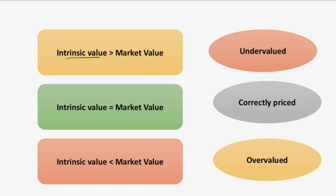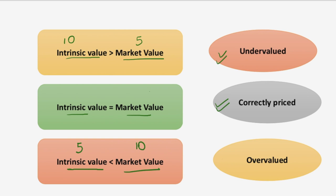First: if the intrinsic value is more than the market value — for example, intrinsic value is ₹10 but market value is only ₹5 — then the stock is undervalued in the market, because the actual worth is not captured by the market price. Second: if intrinsic value equals market value, then the stock is correctly priced. Third — which our question relates to: when intrinsic value is ₹5 but market value shows it at ₹10, the market has overvalued the price of the share.